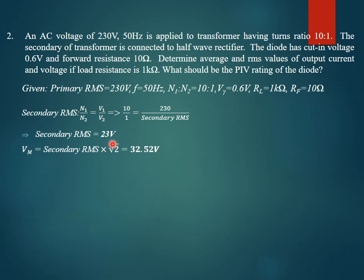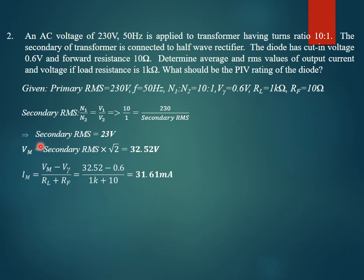One important note: irrespective of whether the rectifier is half-wave or full-wave, the secondary peak voltage is always secondary RMS × √2. Since we are given the cut-in voltage Vγ and forward resistance RF, the expression for Im becomes Im = (Vm − Vγ) / (RL + RF). Substituting gives the peak current Im = 31.61 mA.